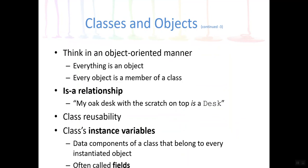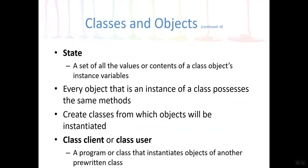So those are called instance variables because there's a variable for every instance, every object instance. So a state is really just a set of all the values or contents of a class's object at a particular time. So Spike was four years old and had his shots. That is the state of that object.